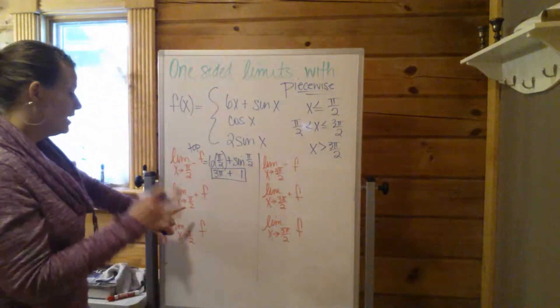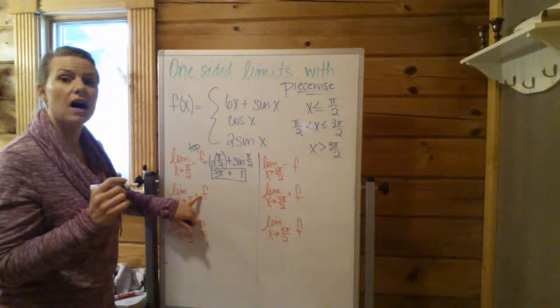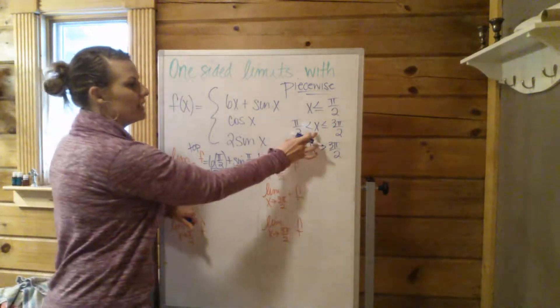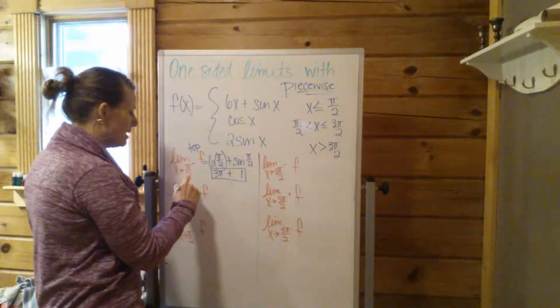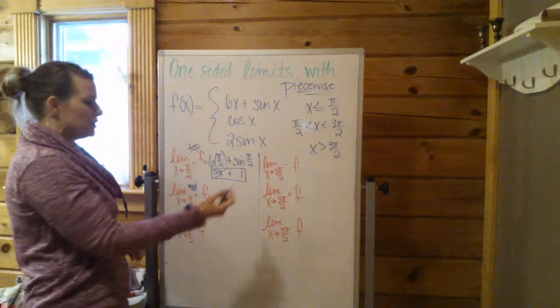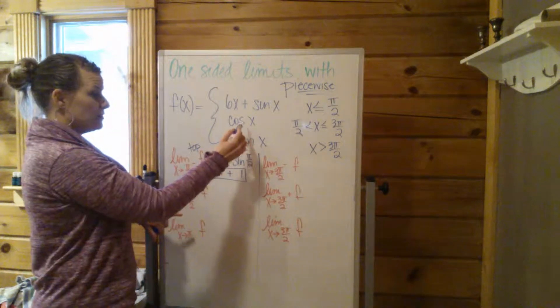Moving on. Back to the one-sided limit idea. Approaching π/2 from the right. That means slightly greater than π/2. That's going to be this line right here. So we're talking middle. I'm using the middle one. So now I'm going to plug π/2, what I'm approaching, into the middle guy.